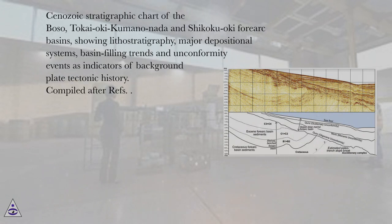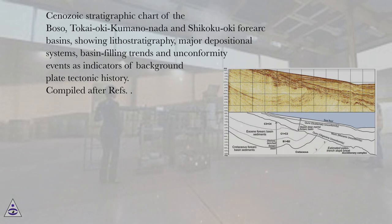Cenozoic Stratigraphic Chart of the Boso, Toke-Oki, Kumano-Nada, and Shikoku-Oki Forearc Basins, showing lithostratigraphy, major depositional systems, basin filling trends, and unconformity events as indicators of background plate tectonic history.